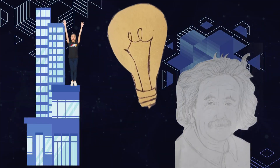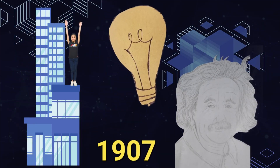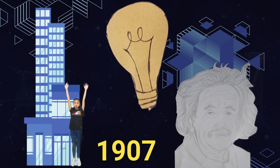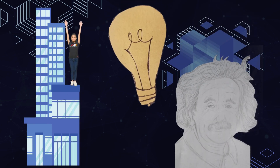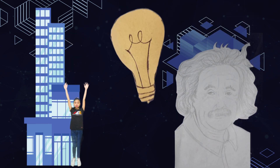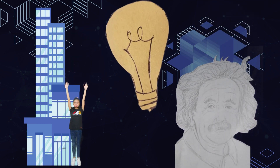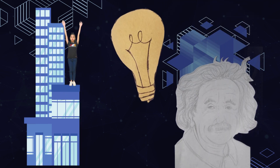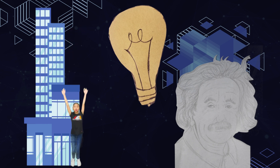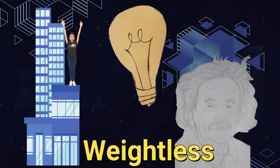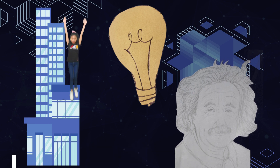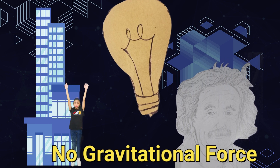In 1907, Albert Einstein imagined a person falling from a building. He later considered it the happiest thought of his life, because he was imagining that as the person was falling, he became weightless. And that by going into free fall, there will be no gravitational force.